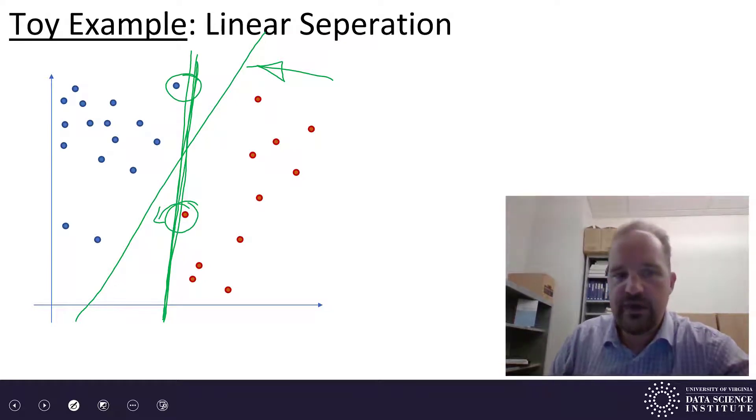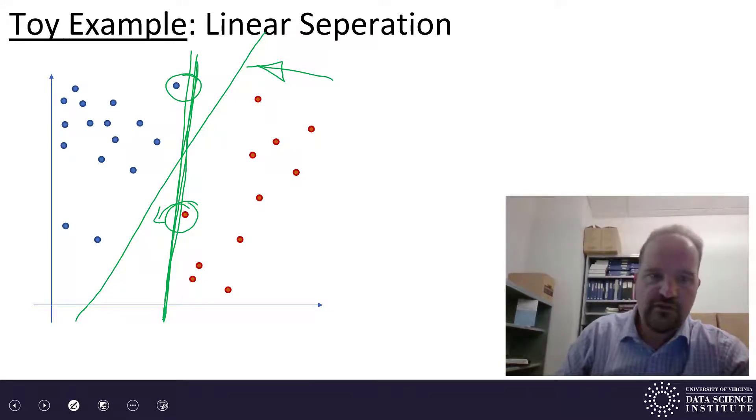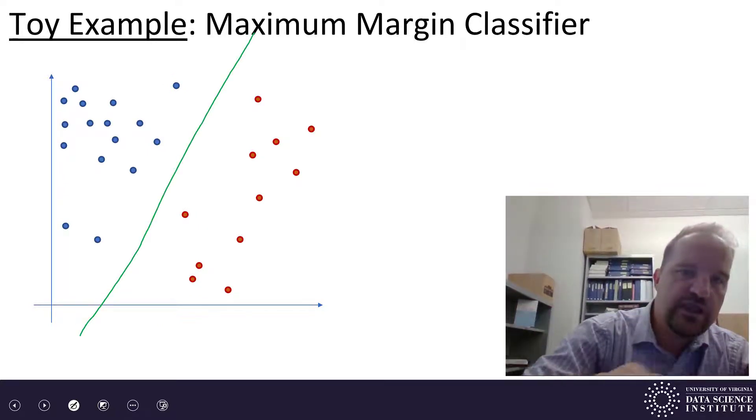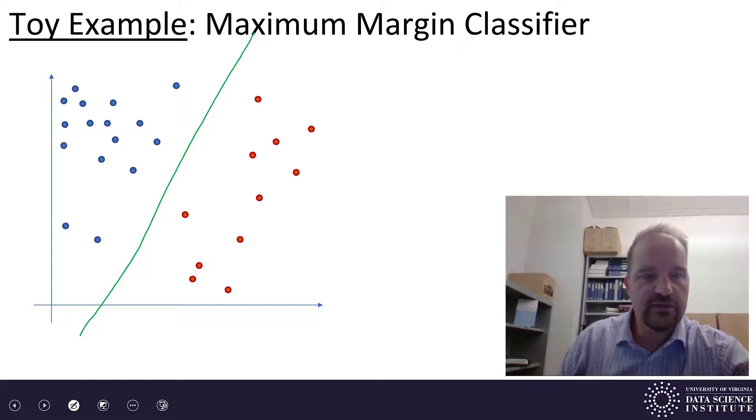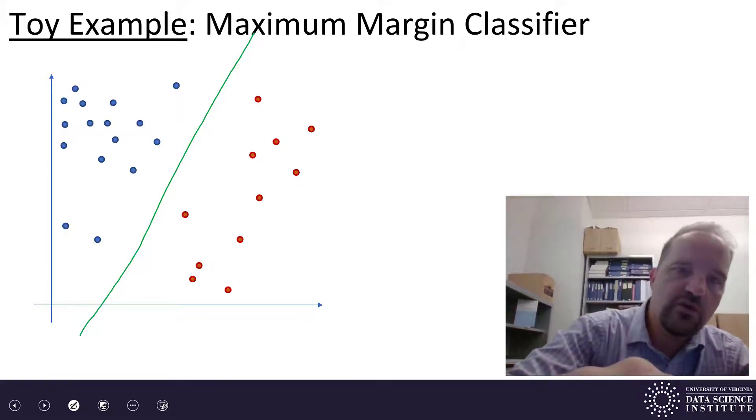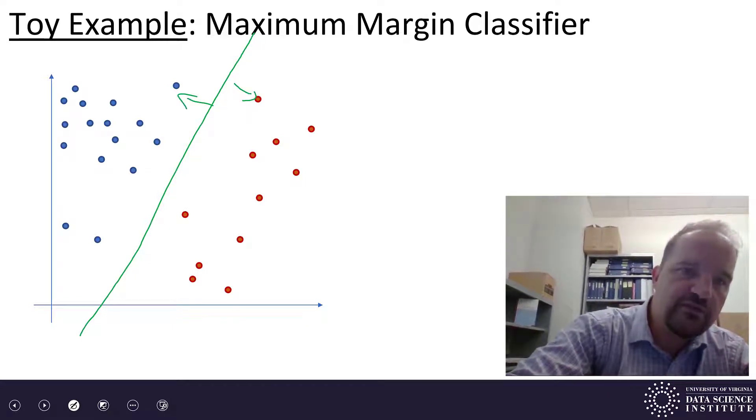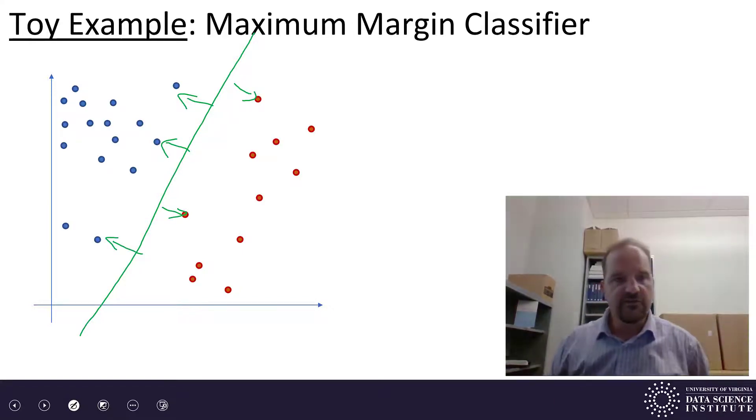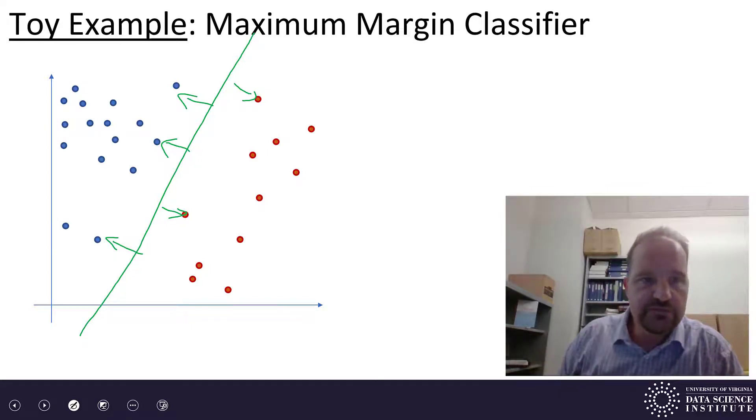So what we're going to talk about with the maximum margin classifier is this. We're going to look for a separating linear plane or in this case it's just a line but a linear subspace that's going to separate the two classes where the distance to all the nearest data points is at least as maximum as possible, as large as possible.